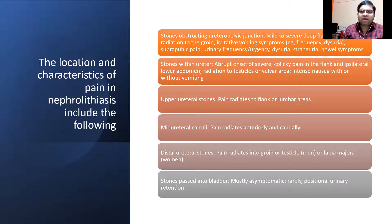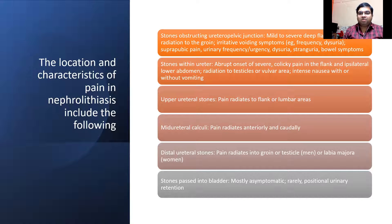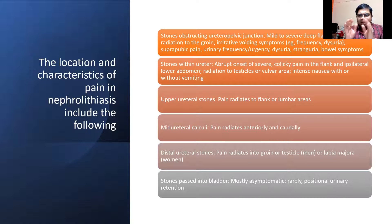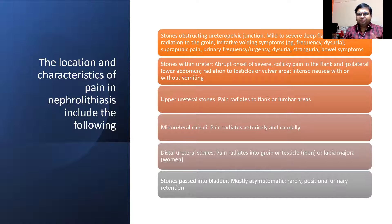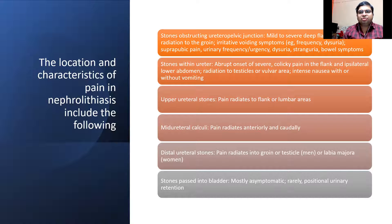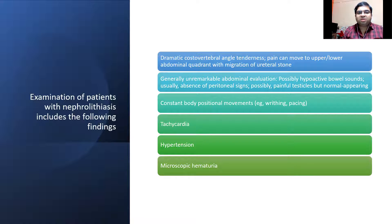For distal ureteric stones, pain can radiate to the tip of the penis, scrotum, or in females to the labia. Small stones in the bladder may be passed during urination, as the urethra is shorter and wider than the ureter. In males, due to the longer urethral segment and the prostate, they can have severe strangury — pain at the tip of the penis at the end of urination — when a stone is impacted at the trigone.